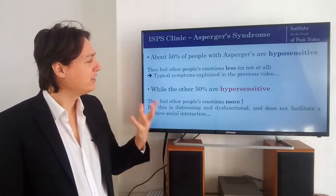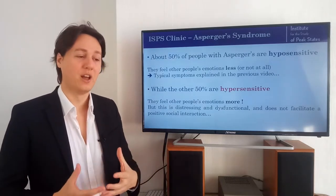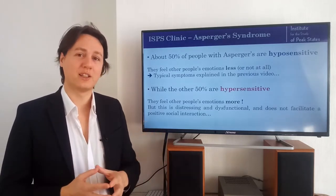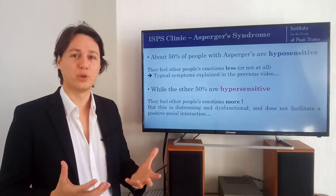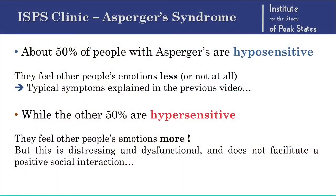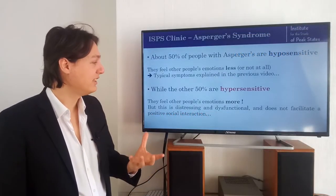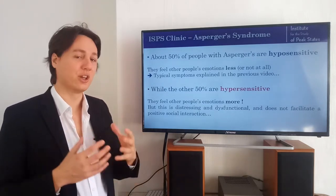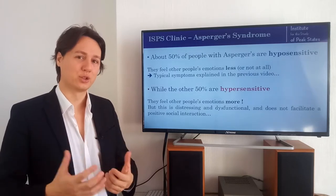When I was having conversations with people who have this wall of glass experience and they were telling me about the symptoms and how they experience life, I was quite surprised to realize that half of them actually feel other people's emotions as more intense and sometimes overwhelming. I eventually found out that around 50% of people with Asperger's symptoms are hypersensitive. People who are hyposensitive feel other people's emotions less or not at all — that's the typical symptom from the previous video. But the other 50% are hypersensitive — it's the opposite, they feel other people's emotions more.